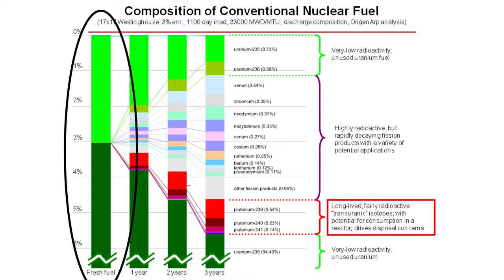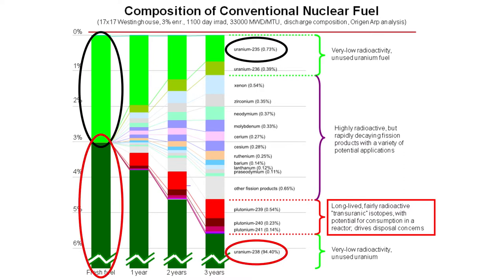When we first load nuclear fuel in a uranium-fueled reactor, it is entirely uranium, and most of that is uranium-238.